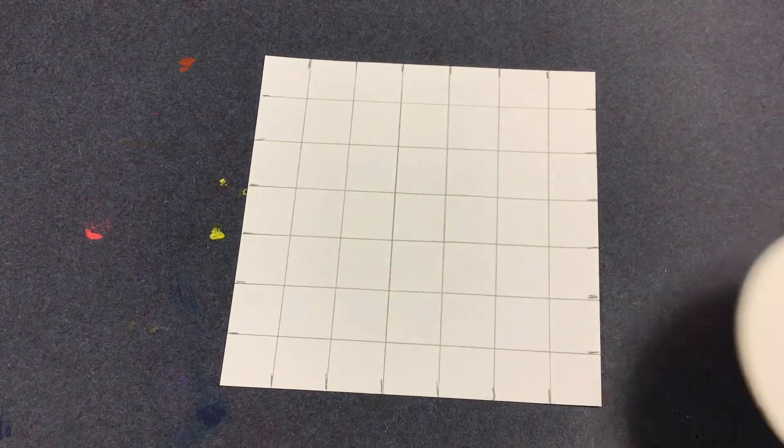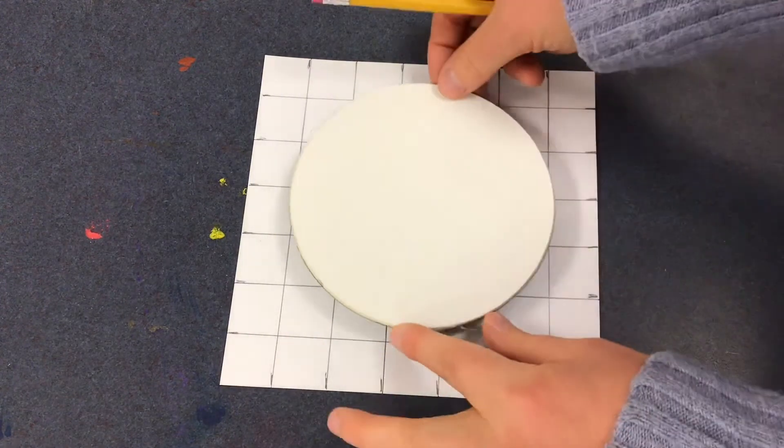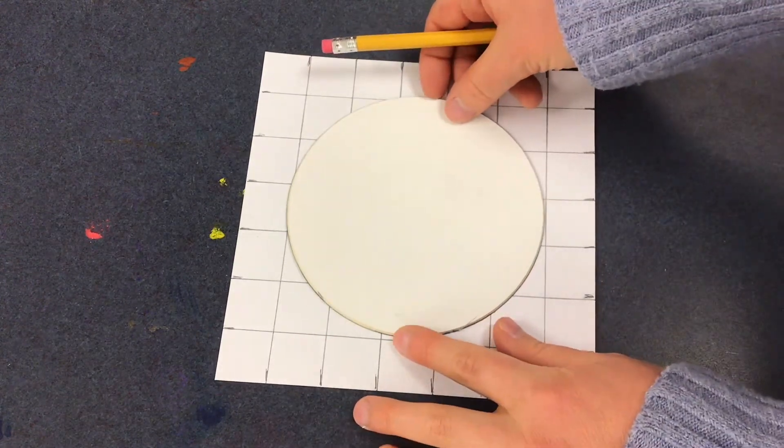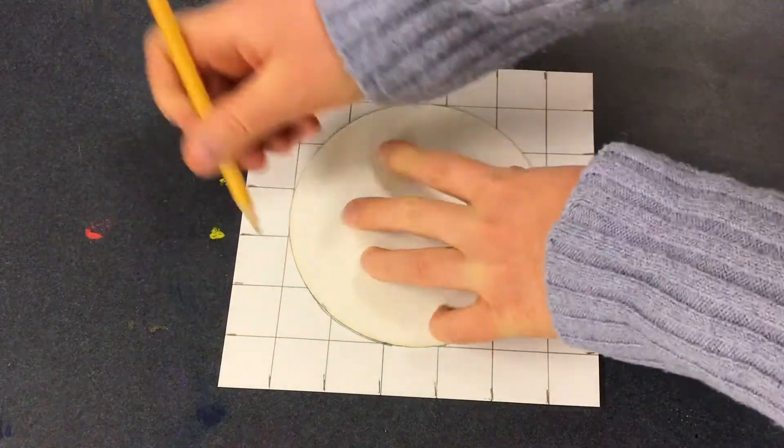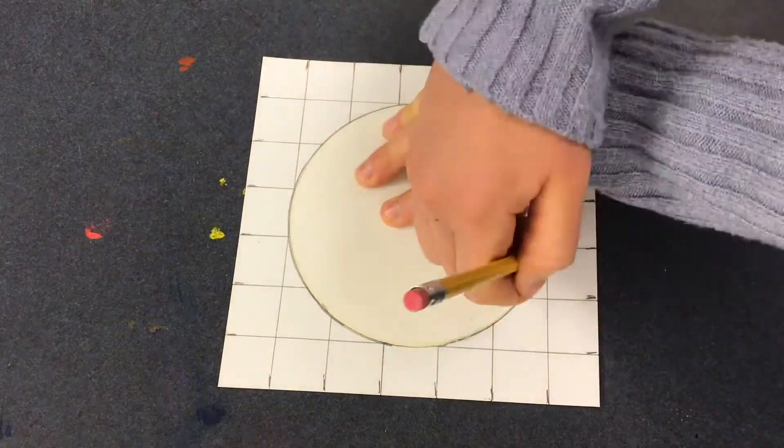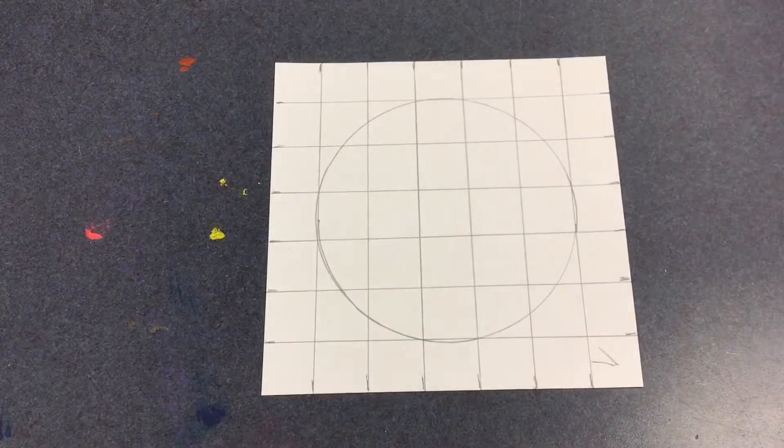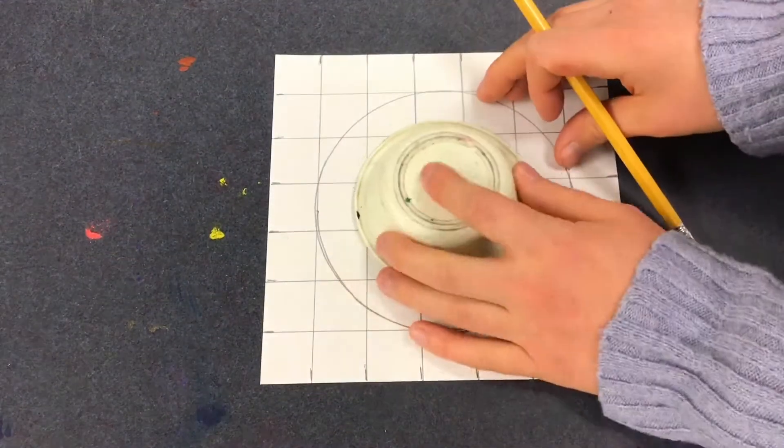When your checkerboard is complete, you will get three circle templates. Take the biggest one first, place it in the middle of your checkerboard and trace around it. Trace the medium sized circle next and then the small circle, and you'll end up with three concentric circles drawn on your checkerboard.